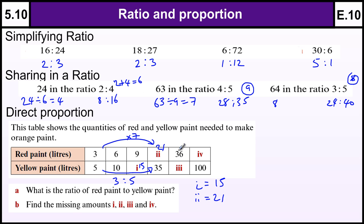And then to get to 36, I would have to times by 12. So iii would be 5 times 12 which is 60. Let's use another color. To get to 100 using the 5,